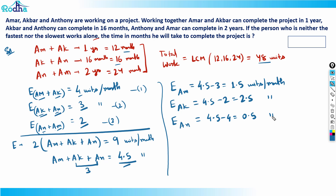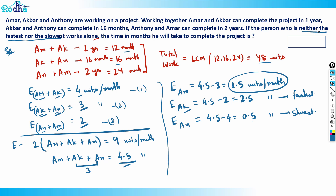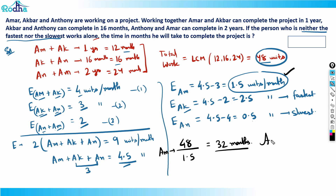So now we have: Akbar's efficiency is 2.5 units per month — he is the fastest. Anthony's efficiency is 0.5 units per month — he is the slowest. Amar's efficiency is 1.5 units per month, meaning he is neither the fastest nor the slowest, as required. The total project is 48 units, so Amar alone will take 48 / 1.5 = 32 months. So 32 months is the answer.